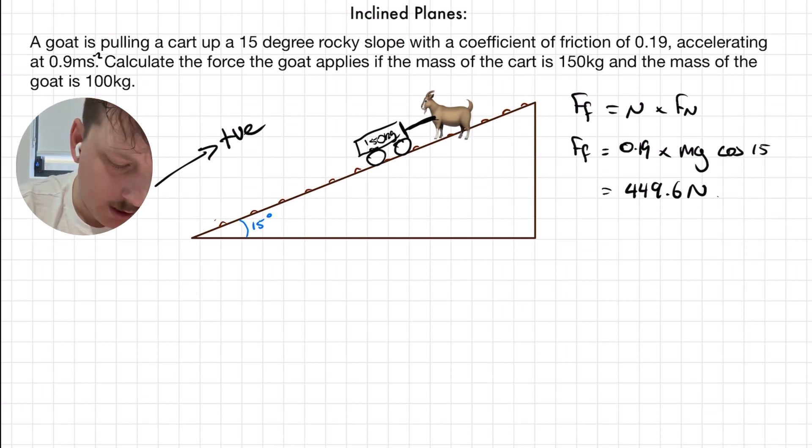Okay. Last time we had a goat moving up a hill, it was moving at a constant rate. This time, it's accelerating. So, our net force is going to be equal to mass times acceleration, or 250 times 0.9. Which is 225 newtons.